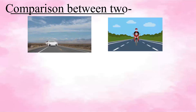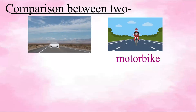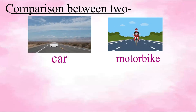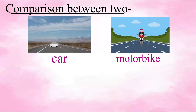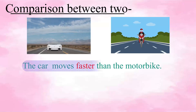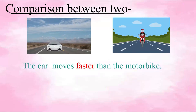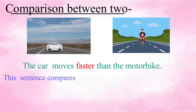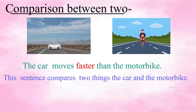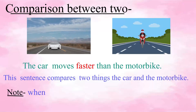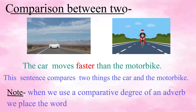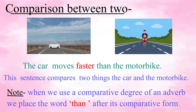Here are two objects — one is a motorbike and another is a car, and they both are in moving position. The car moves faster than the motorbike. This sentence compares two things: the car and the motorbike. When we use a comparative degree of an adverb, we place the word 'than' after its comparative form.